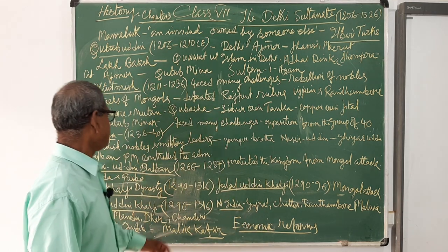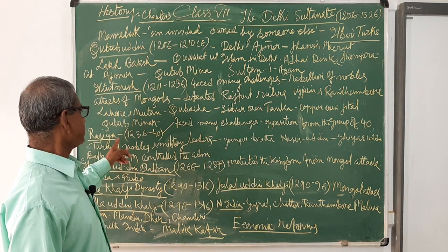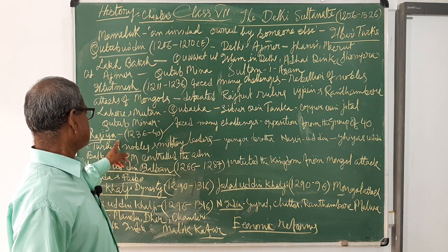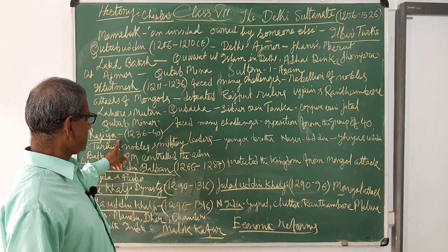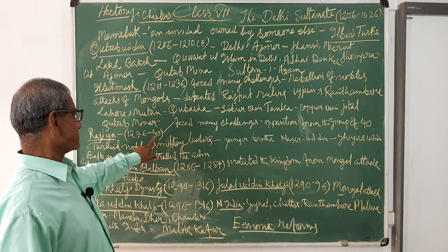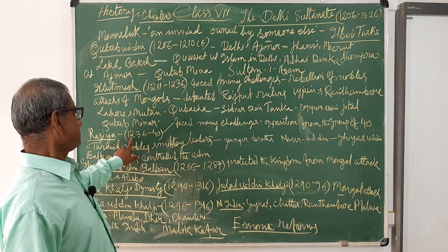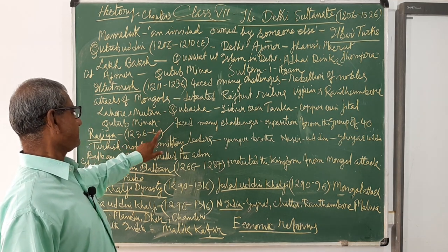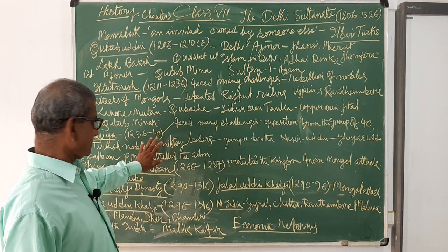Although she was a very brave ruler, Razia ruled for only four years, from 1236 to 1240.